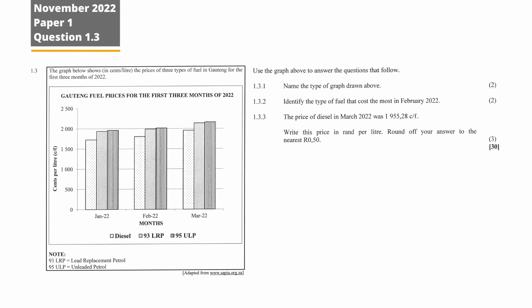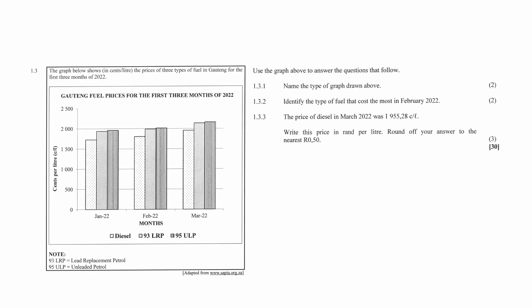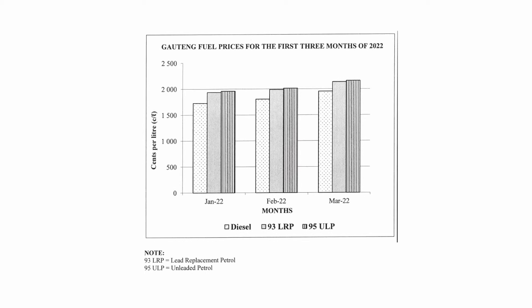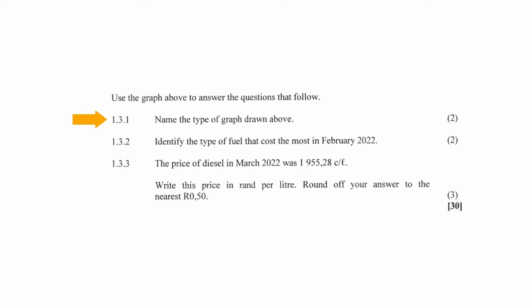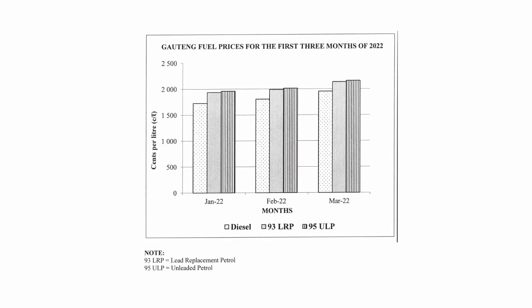Question 1.3 consists of two data handling questions and one finance question designed to assess your understanding of compound bar graphs. You are given a compound bar graph that shows, in cents per litre, the price of three types of fuel in Gauteng for the first three months of 2022. In question 1.3.1, you are instructed to name the type of graph drawn above. The type of graph drawn here is a compound bar graph.